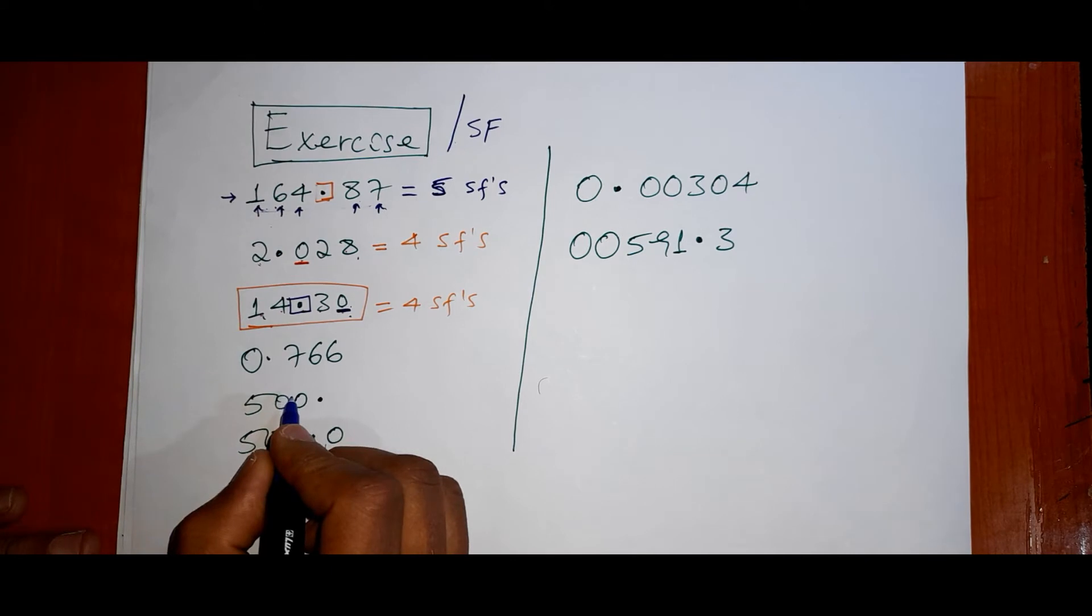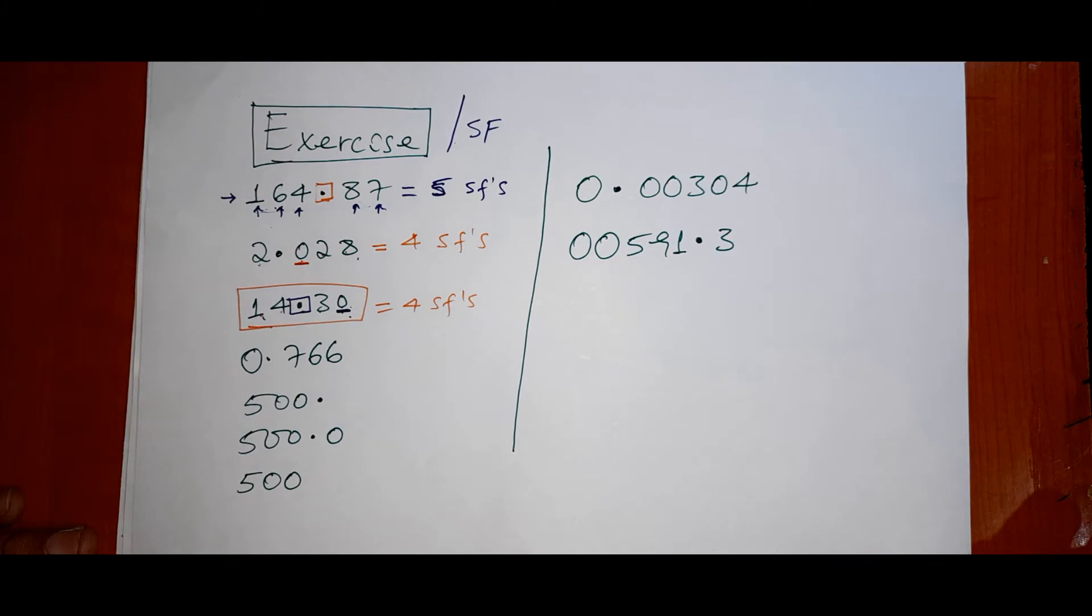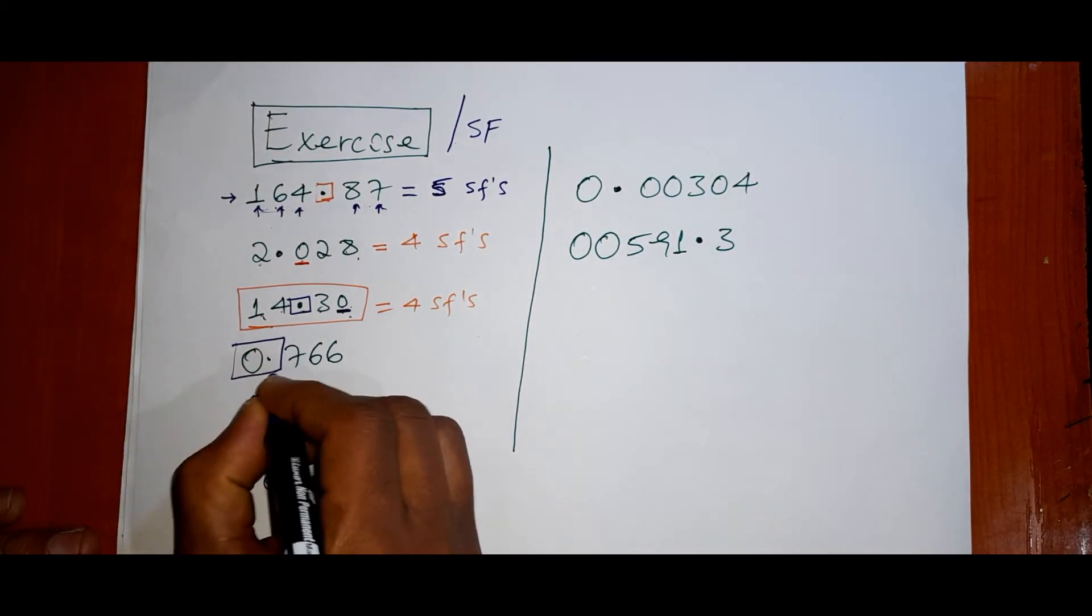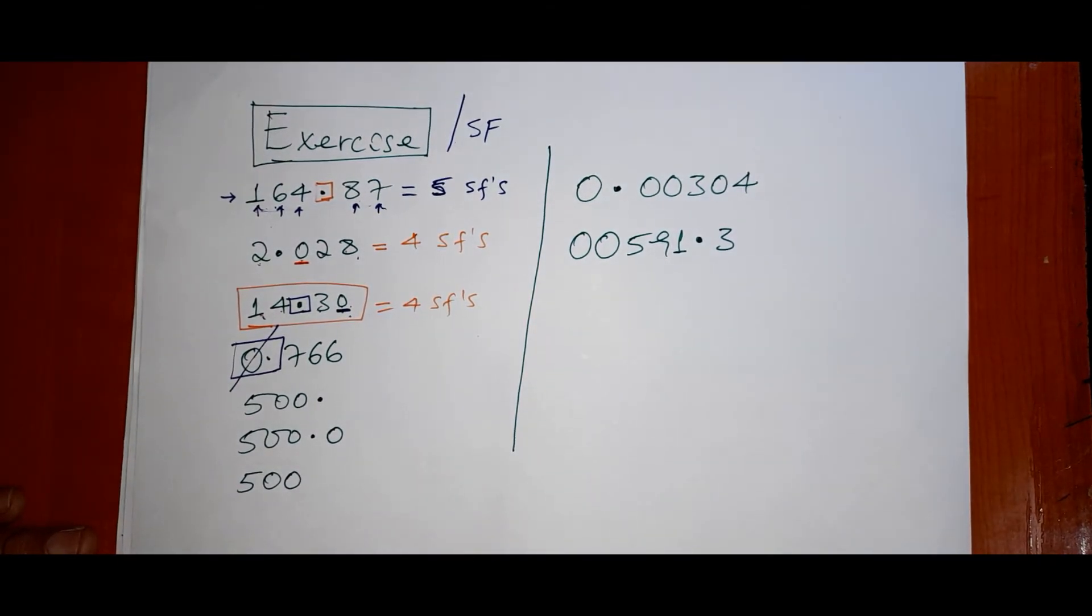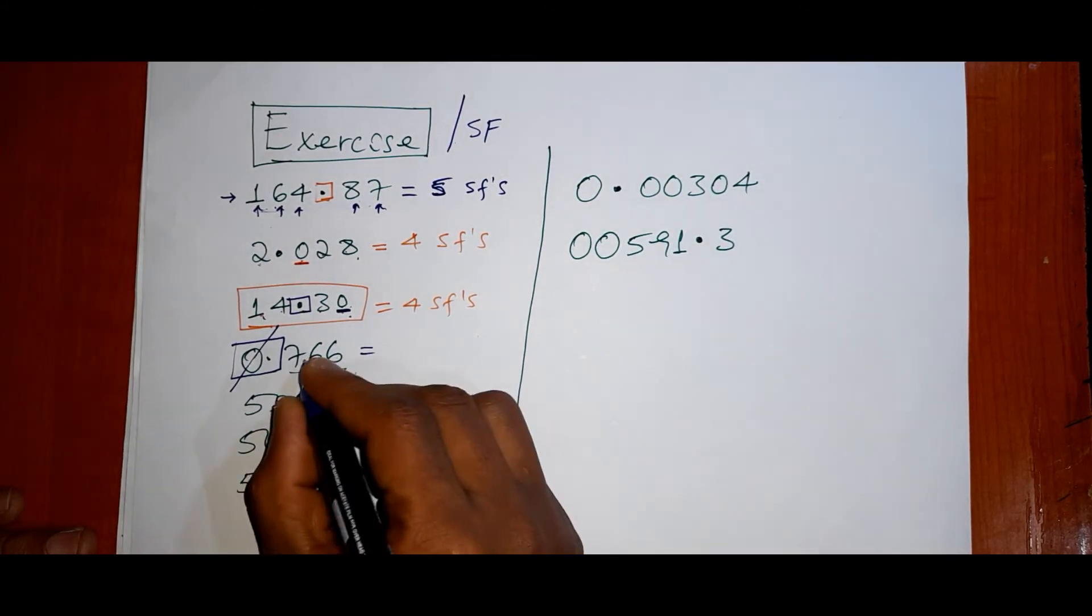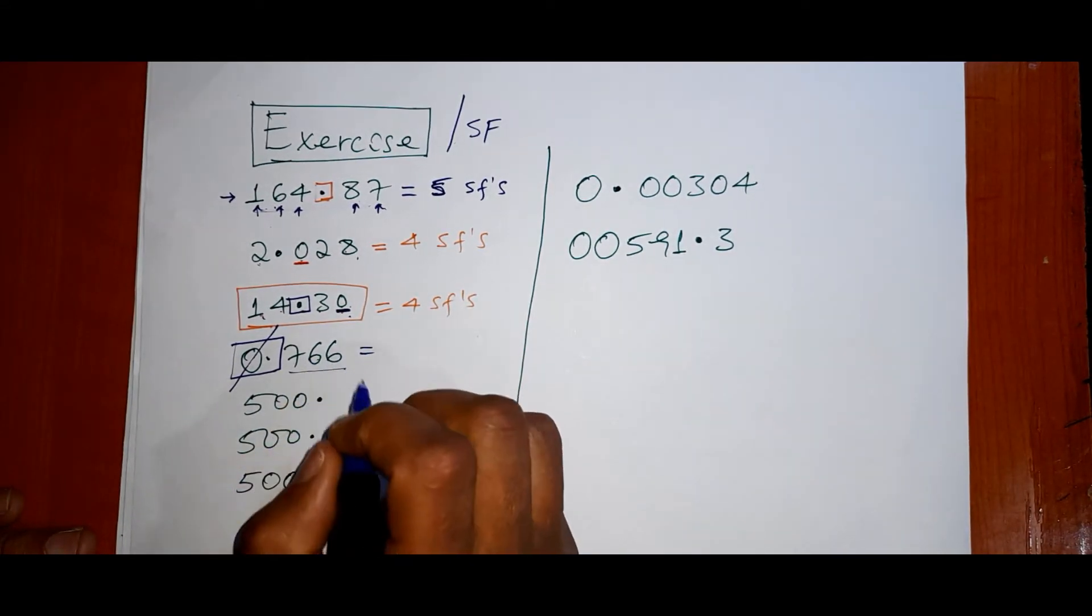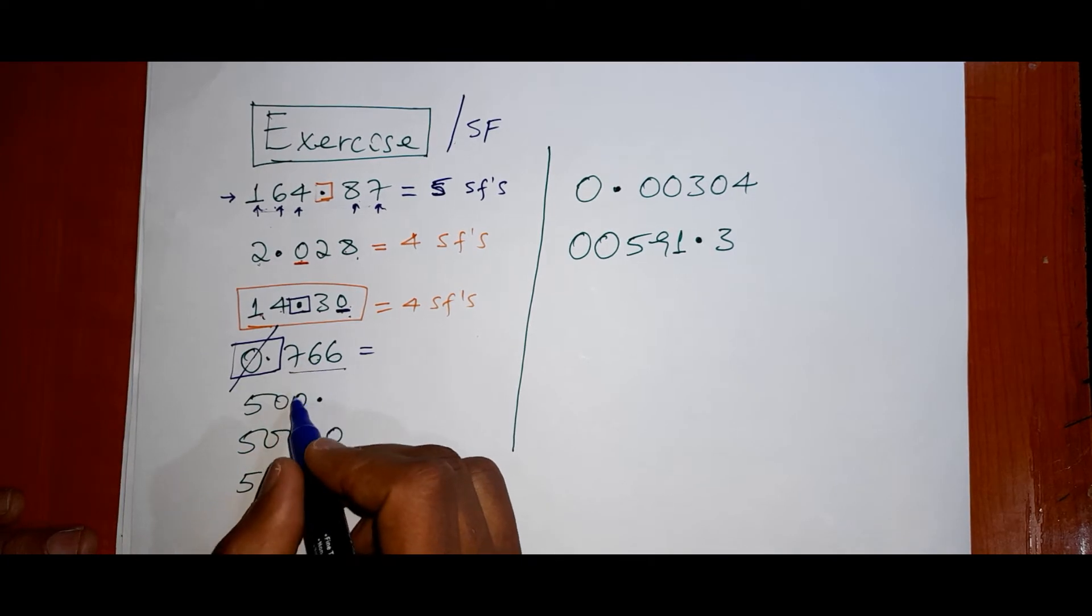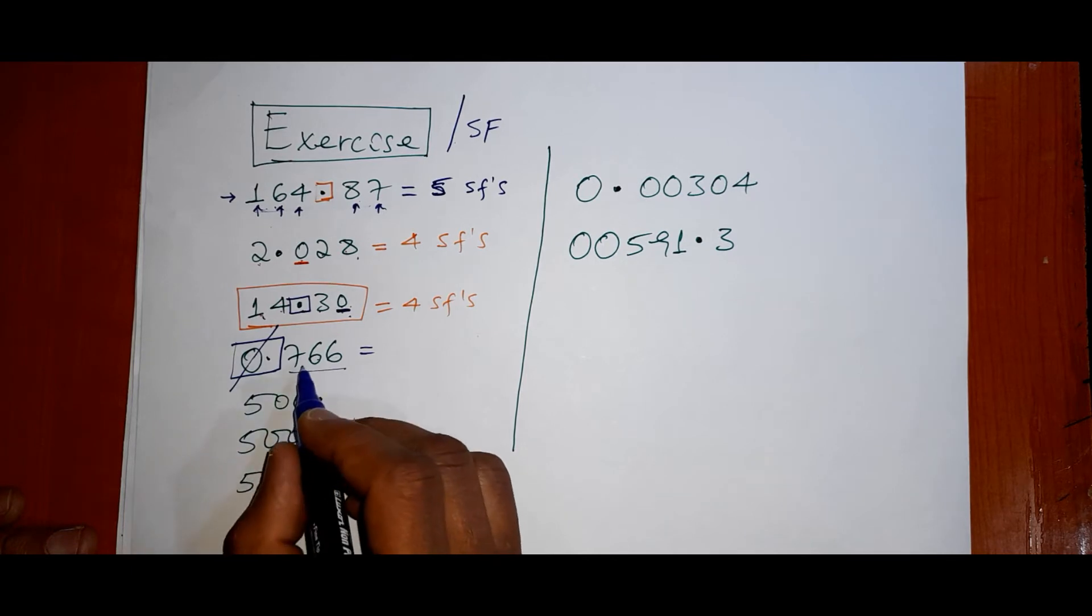The zeros at the beginnings. So 0.766. Zeros at the beginnings of the number are not significant figures. So this, the zeros at the beginning, are not considered as significant figures. Different from zero. 706 - the zero is in the middle, so it's counted.